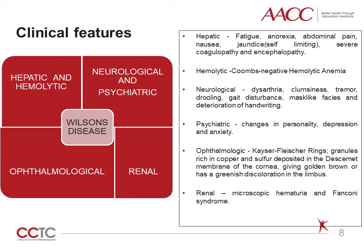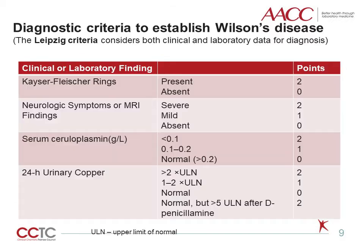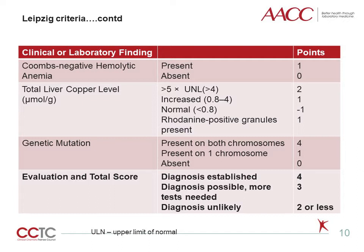The associated renal symptoms can be microscopic hematuria or Fanconi syndrome. The Leipzig criteria, published by the European Association for the Study of the Liver and validated in adults and children, should be used for the diagnosis of Wilson's disease, which considers both the clinical and laboratory data to establish the diagnosis. The clinical data includes presence of the Kayser-Fleischer rings and neurological manifestations. The laboratory testing includes ceruloplasmin, urine copper, hepatic copper, Coombs test for hemolytic anemia and molecular testing for ATP7B mutation. When a score of 1 to 2 is achieved, it excludes Wilson's disease, while a score of 3 suggests further evaluation. The diagnosis is established after achieving at least 4 points.